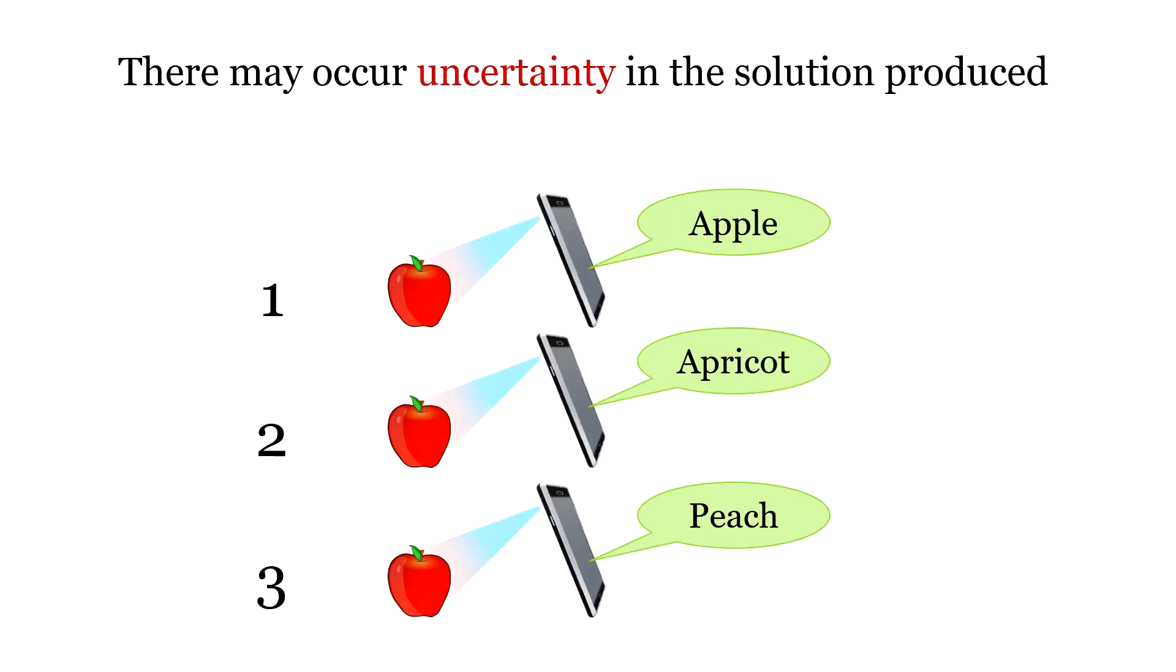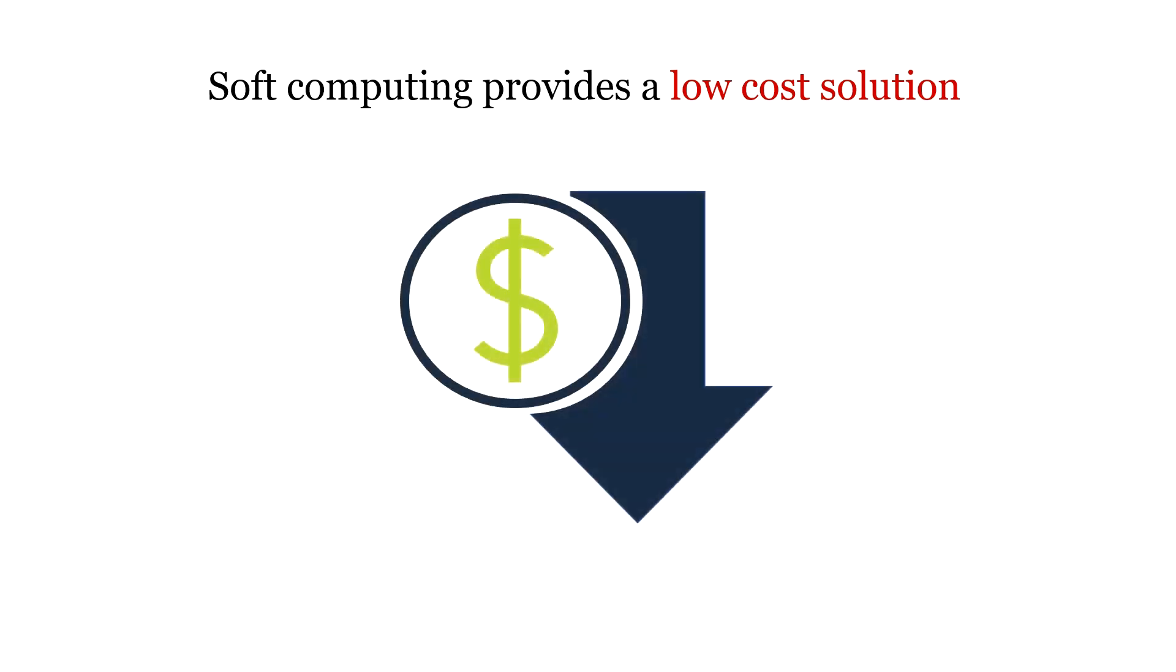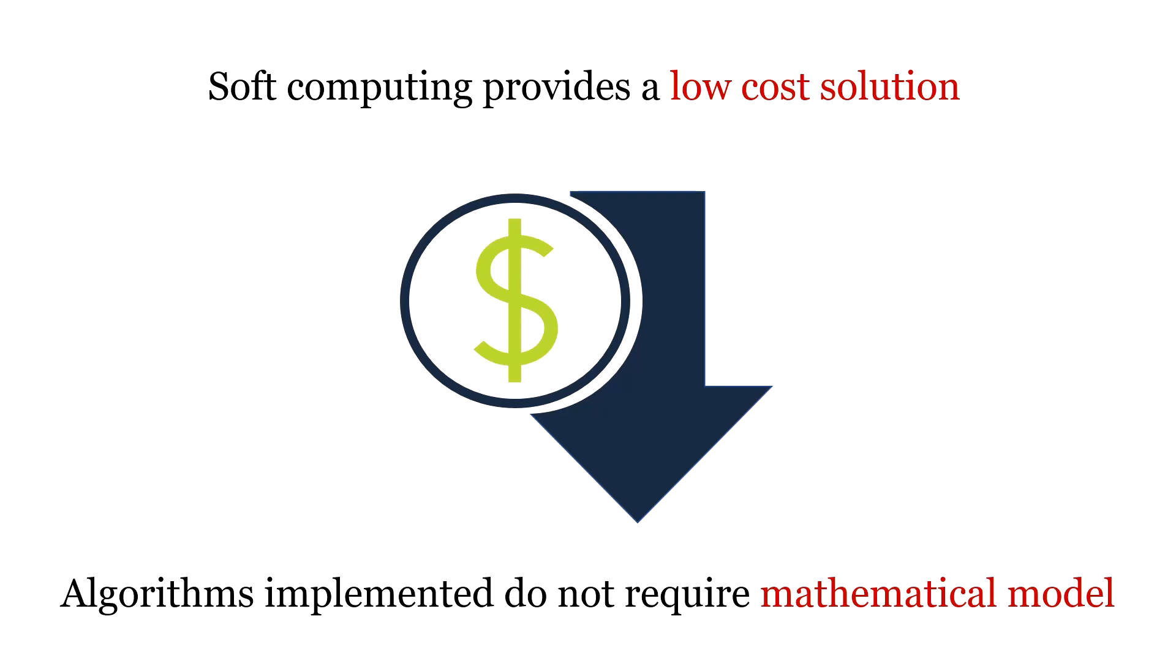Next, there may occur uncertainty in the solutions produced. That is, for the same given input, soft computing functions can produce different results. As there is imprecision and uncertainty in the solution, soft computing provides a low cost solution. And there is no mathematical model in the algorithms implemented for soft computing.